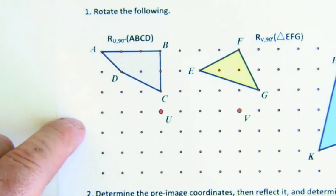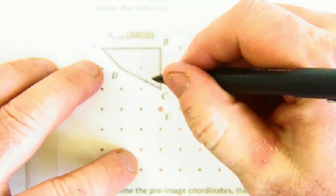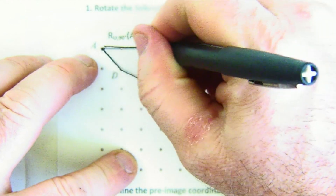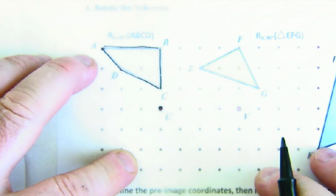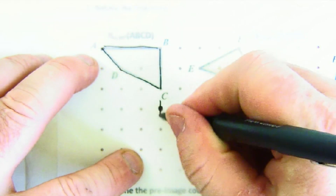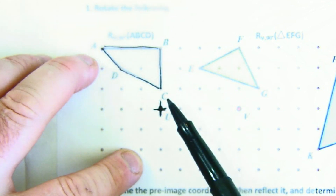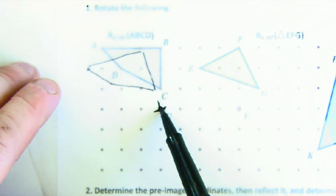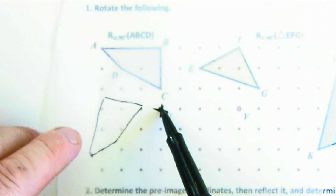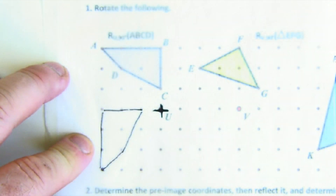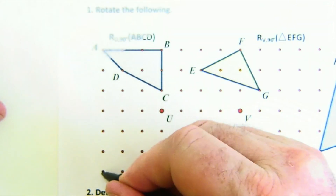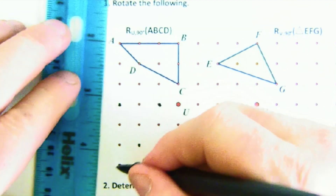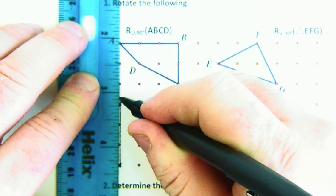I quickly sketch my shape and mark point U. I'm going to do a 90-degree turn. Since I'm on a grid, I'm going to make a plus sign — that plus sign helps me know when 90 degrees is taking place. I go counterclockwise, turning until my plus sign is upright again. There is my new location, and now I can record where the points were.